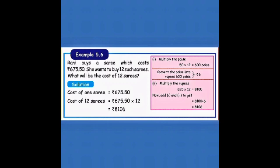Cost of 1 saree equals rupees 675.50. Cost of 12 saris equals rupees 675.50 multiplied by 12. Here first we multiply the paise. 50 paise into 12, that equals 5×12 is 60. You have to add 1 zero, so 600 paise. 600 paise means how many rupees? 6 rupees.